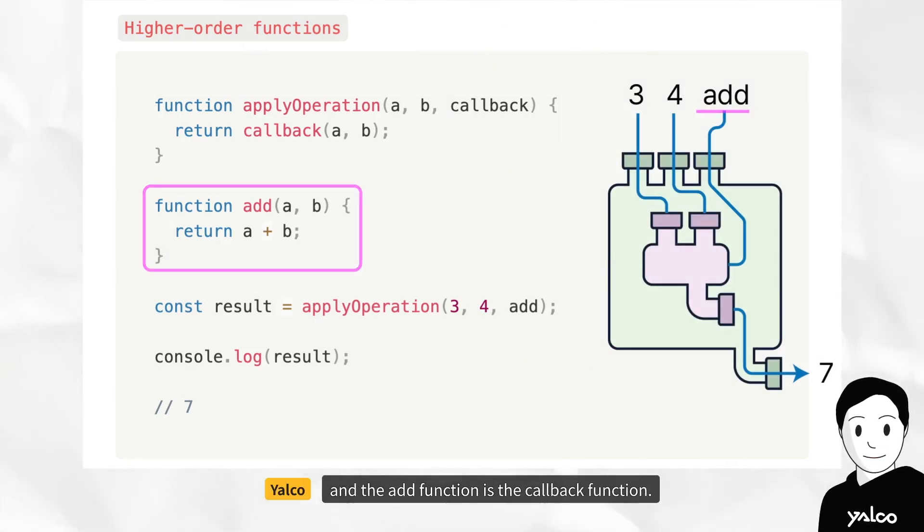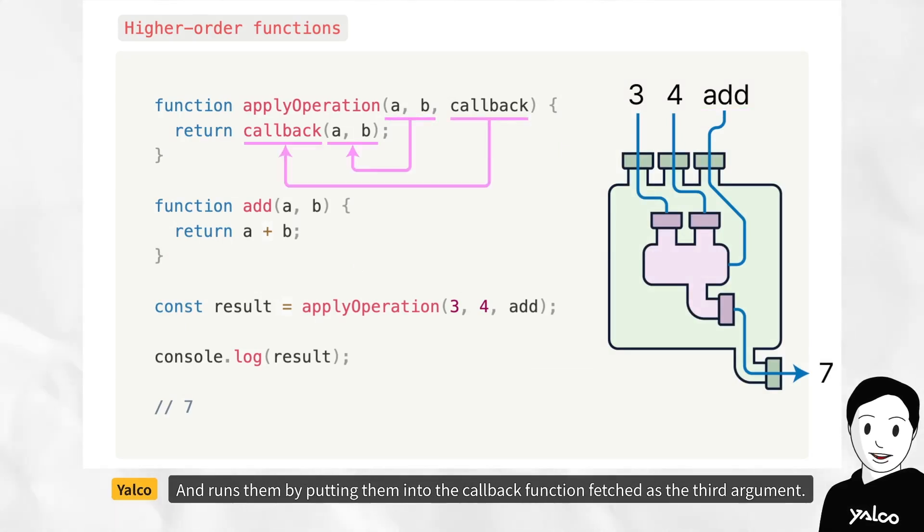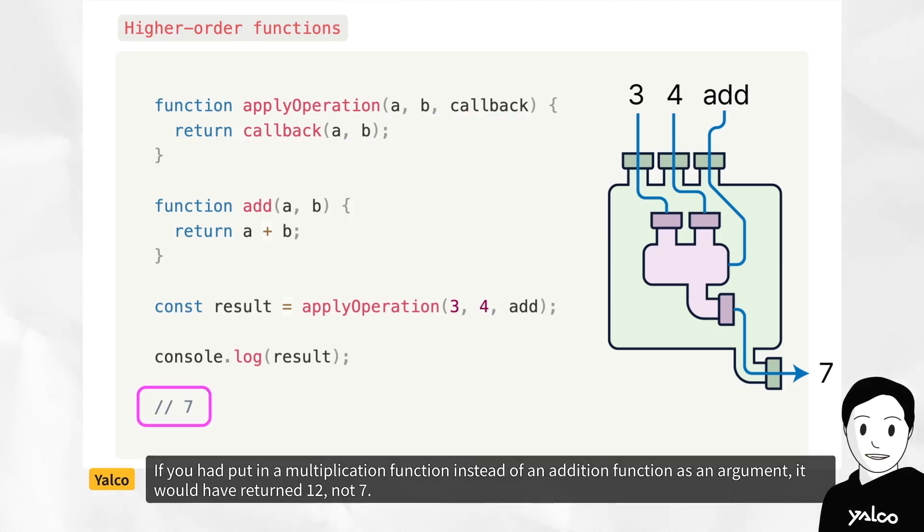The applyOperation function fetches the first and second arguments as two numbers, and runs them by putting them into the callback function fetched as the third argument. If you had put in a multiplication function instead of an addition function as an argument, it would have returned 12, not 7.